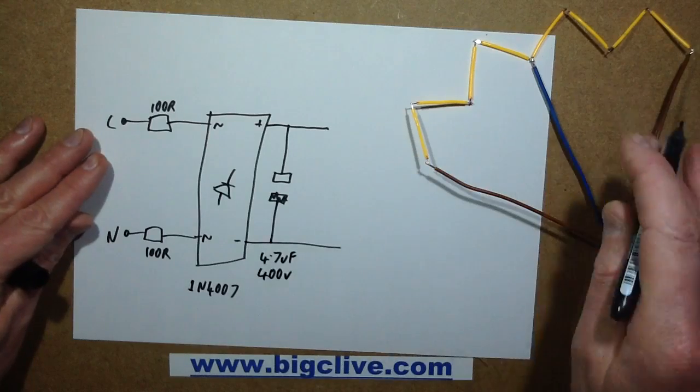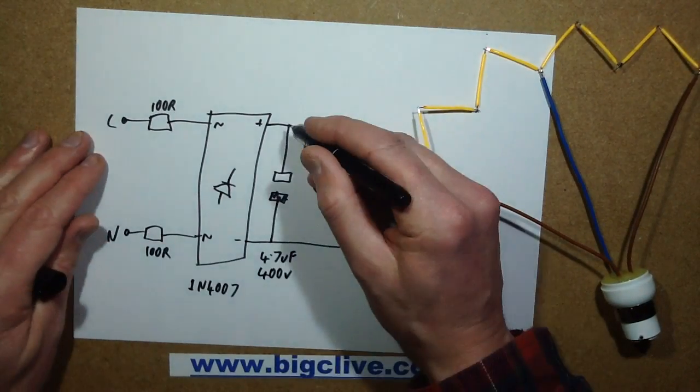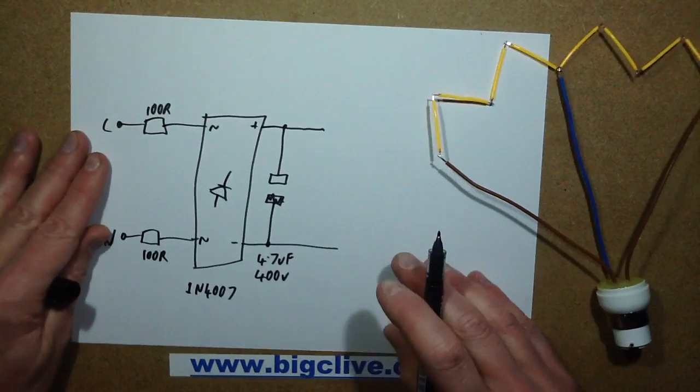And that, because these operate at very low current, really low current, it means that there's no flicker at all. Absolutely nothing. It's just a solid, soft light. Not high current, I have to say.